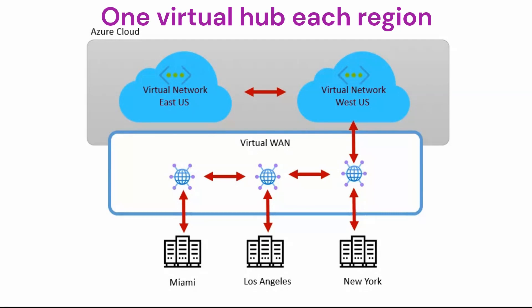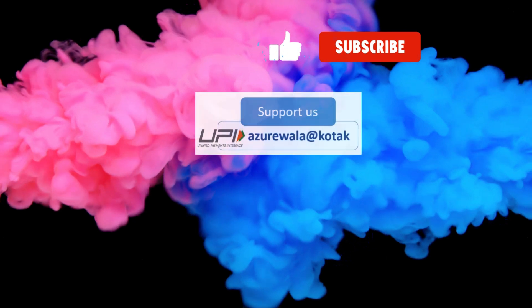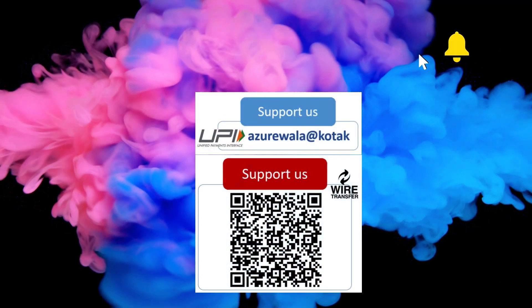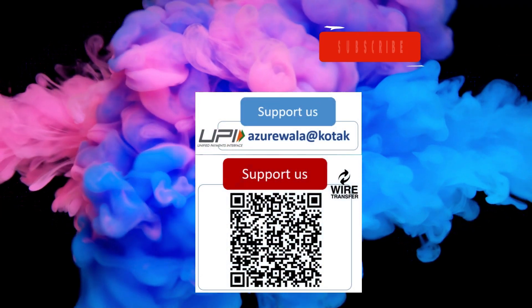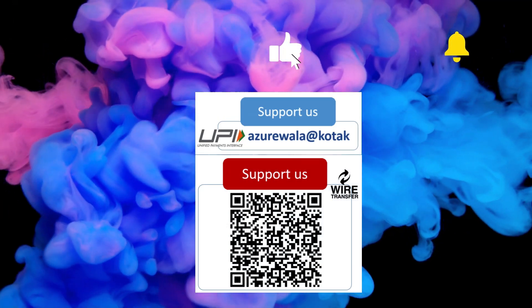Going back to the question, option B — three virtual hubs and one virtual WAN — is the correct answer. I hope this video was informative for you. Please hit the like button, subscribe to my channel, and press the bell notification icon. Thank you for watching this video. See you in the next video.